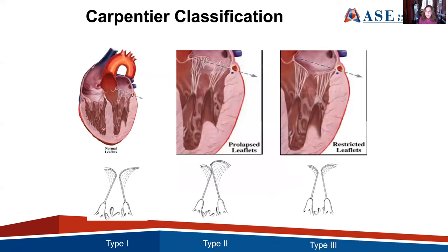Carpentier came up with a specific classification to identify the different mechanisms that cause mitral regurgitation, dividing them into three groups. Type 1 is a dilated annulus or a perforated leaflet that causes the mitral regurgitation. This cartoon demonstrates that the annulus is dilated — that's called a type 1.